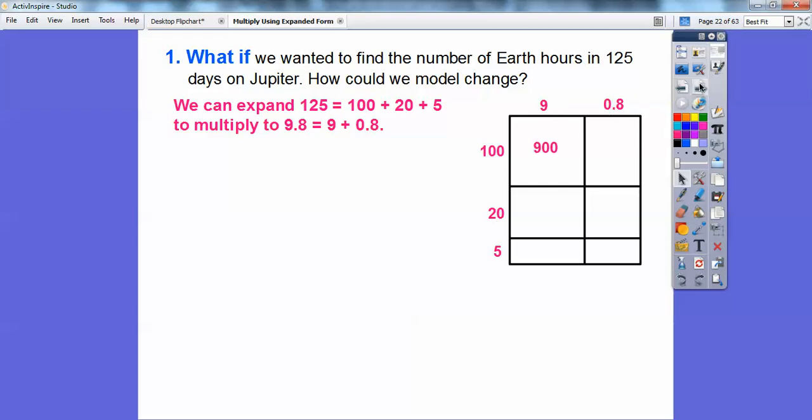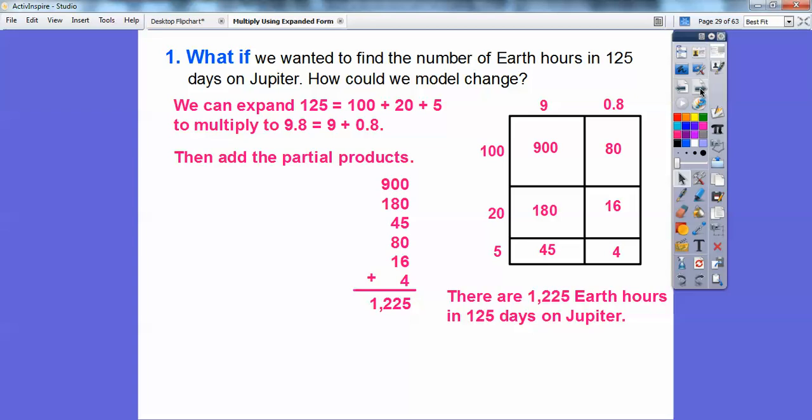100 times 9 is 900. 100 times 0.8 is 80. 20 times 9 is 180. 20 times 0.8 is 16. 5 times 9 is 45. 5 times 0.8 is 4. Then we add up those partial products and we get 1,225. So there are 1,225 Earth hours in 125 days on Jupiter.